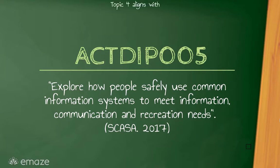Topic 4 aligns with the Australian Curriculum's Digital Technologies Processes and Production Skills Code, ACTDIP005, which requires students to explore how people safely use common information systems to meet information, communication and recreation needs.